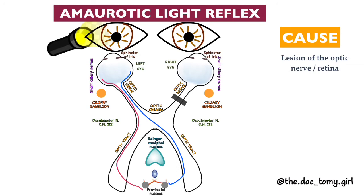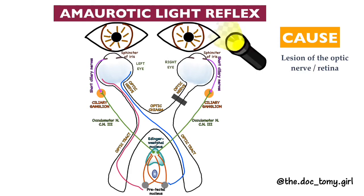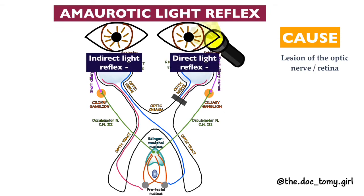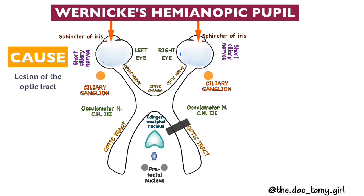The first condition is the amaurotic light reflex. When the light is shown to the normal side, both pupils react normally. But when the light is shown to the affected side — in this case the right eye — there will be an absence of direct light reflex on the affected side and an absence of consensual light reflex on the normal side. The term amaurosis is a Greek word meaning dark or obscure. The cause is a complete lesion of the optic nerve or retina of the same side, leading to complete blindness on the affected side. In diffuse illumination, both pupils will be of equal size and the near reflex will be intact.